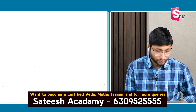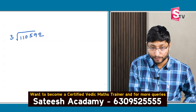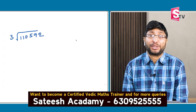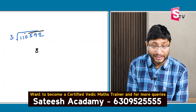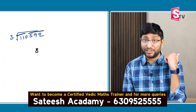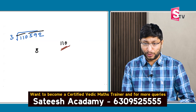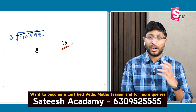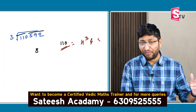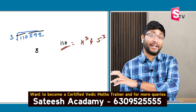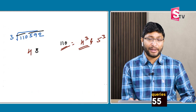One more example: cube root of 110592. The number ends with 2, so from the table the cube root ends with 8. Split as 110 and 592. Now, 110 falls between 4 cube (64) and 5 cube (125). The lowest number is 4. So the answer is 48.